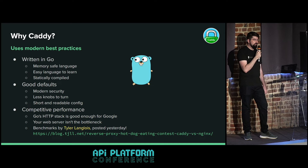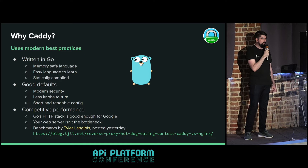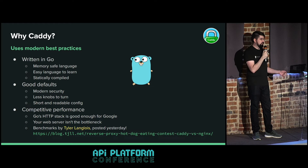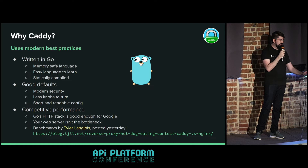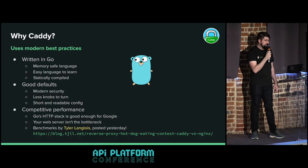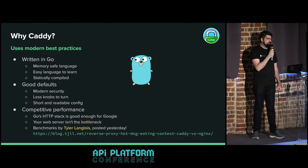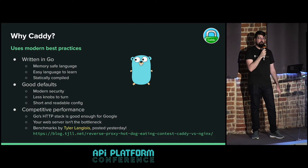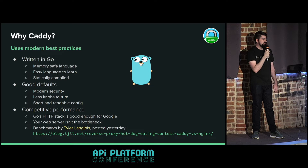Caddy prides itself on having good defaults, which is important for making sure your apps are secure without changing a bunch of config options. It also means you have a smaller, easier-to-read config file. Caddy has competitive performance using Go's standard HTTP stack - it's fast enough for Google, so it should be fast enough for you. Keep in mind your web server is almost never the bottleneck; usually it's your PHP code and database queries. Tyler Langlois posted some extensive benchmarks comparing Caddy with Nginx if you want a recent example.